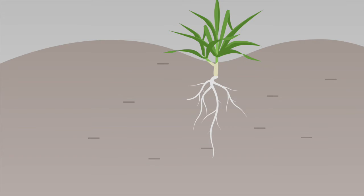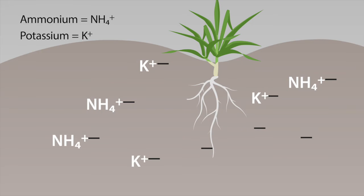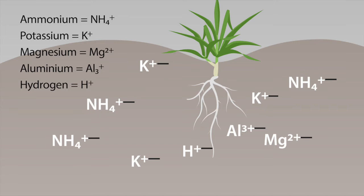In this scenario, the soil particles have negative charges, which attract positively charged ions such as ammonium, potassium, and magnesium. If a soil is acidic, these negatively charged particles might also attract aluminium and hydrogen ions, which further exacerbates soil acidity issues.